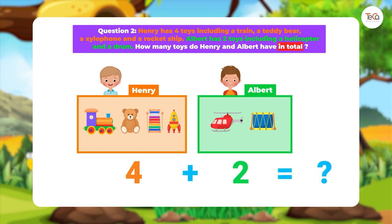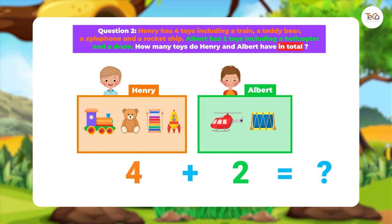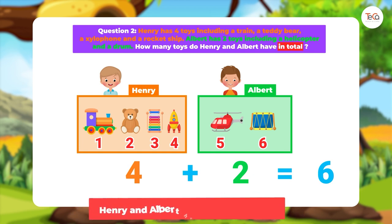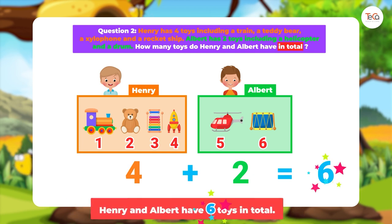Let's count: one, two, three, four, five, six toys. So we answer: Henry and Albert have six toys in total.